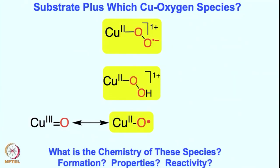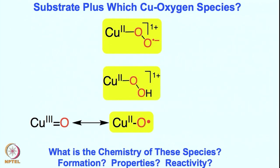Let us go back to the debate: whether copper superoxo species is doing the chemistry in the enzyme, or copper hydroperoxo is doing the chemistry in the enzyme, or cupril is doing the chemistry in the enzyme. To summarize the debate, let us first acknowledge that the first intermediate — as you have seen — is the only intermediate crystallographically characterized in the enzyme. There has been proposition of formation of the hydroperoxo as well as cupril intermediates, but not much characterization has been done in terms of the enzyme.